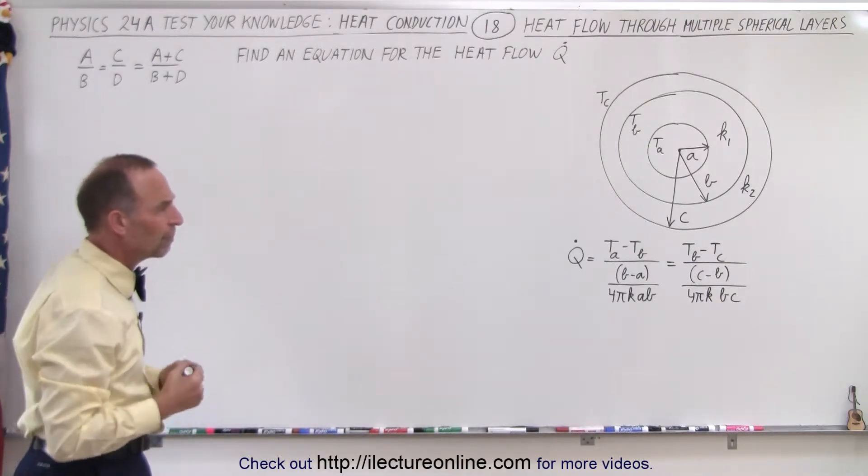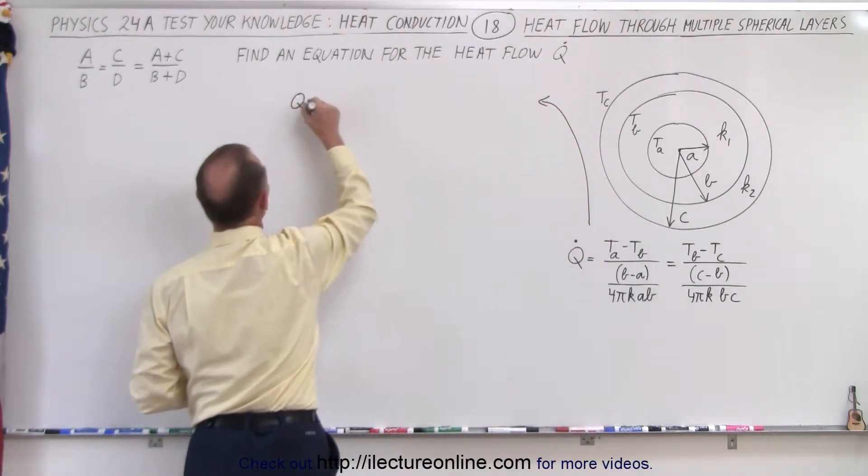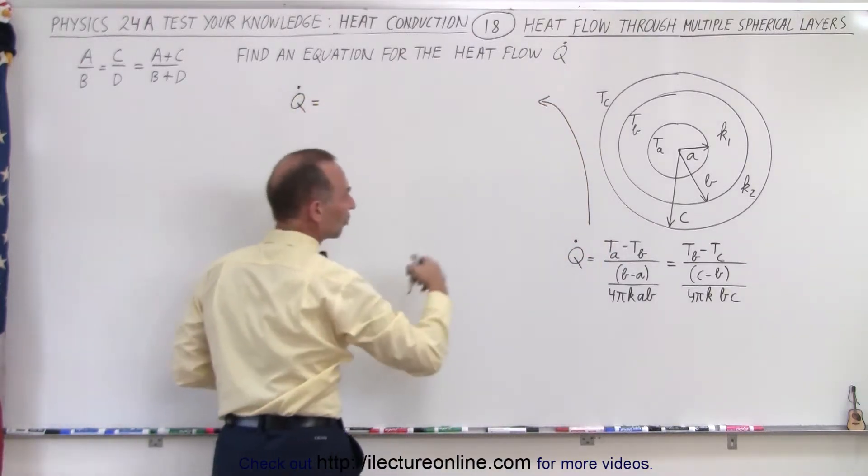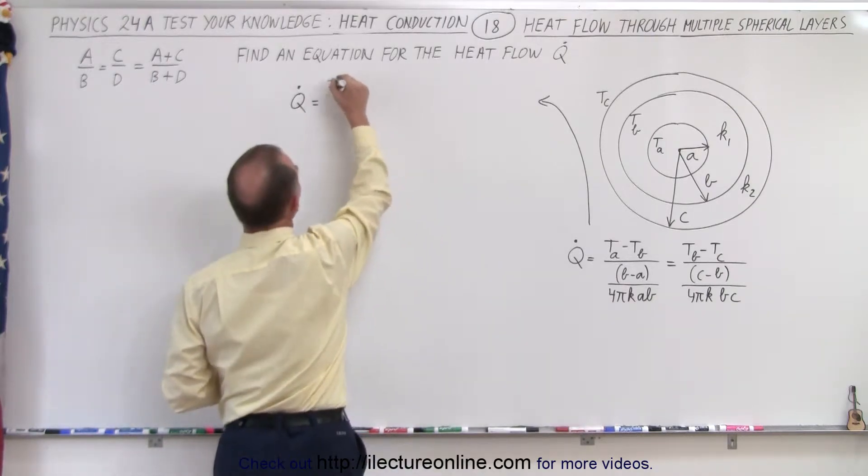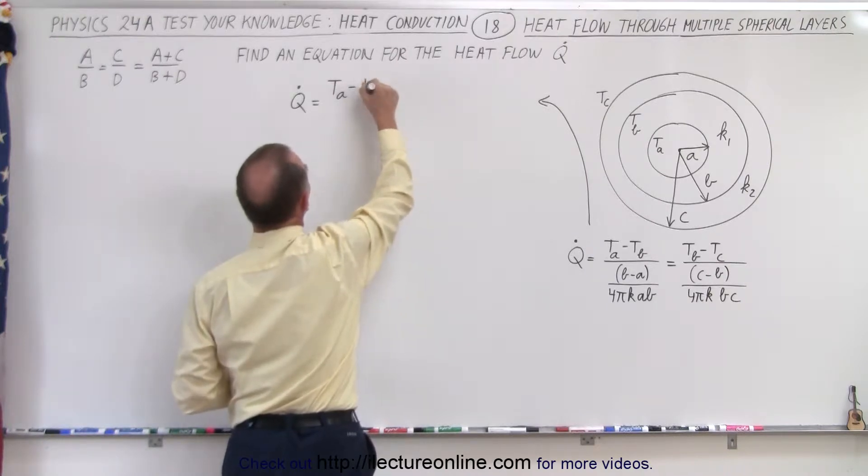So we're going to use the same principle here, which means that we can now write Q dot to be equal to the sum of the numerators, which is TA minus TB. Oops, I'm ahead of myself again here. It would be TB.